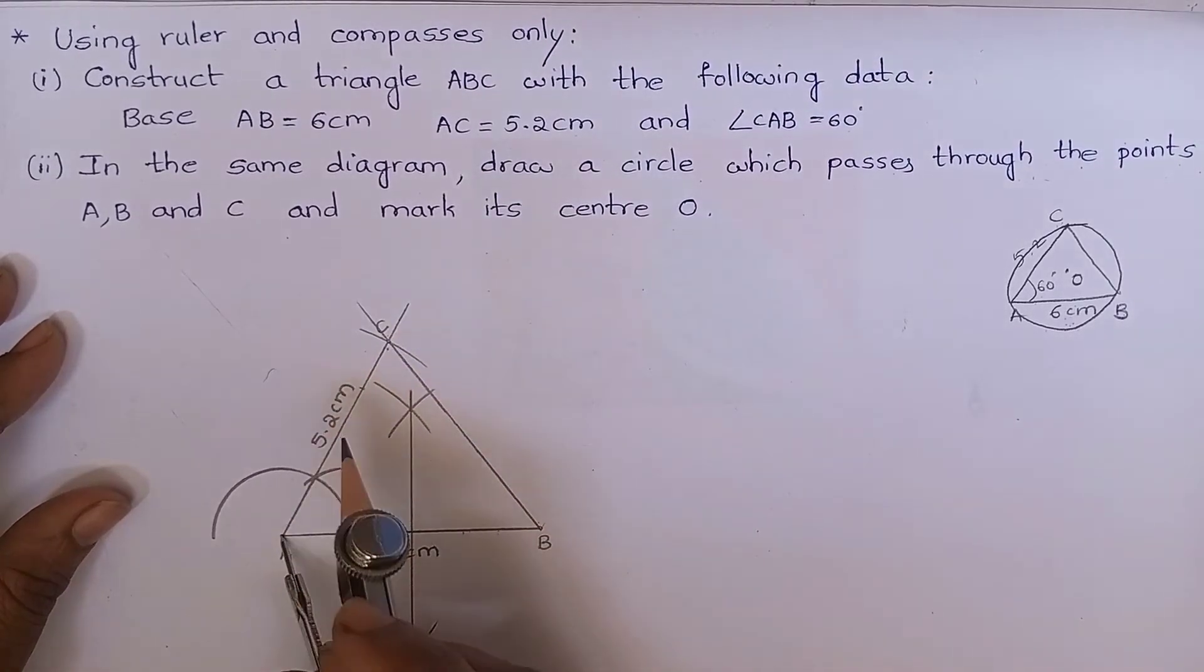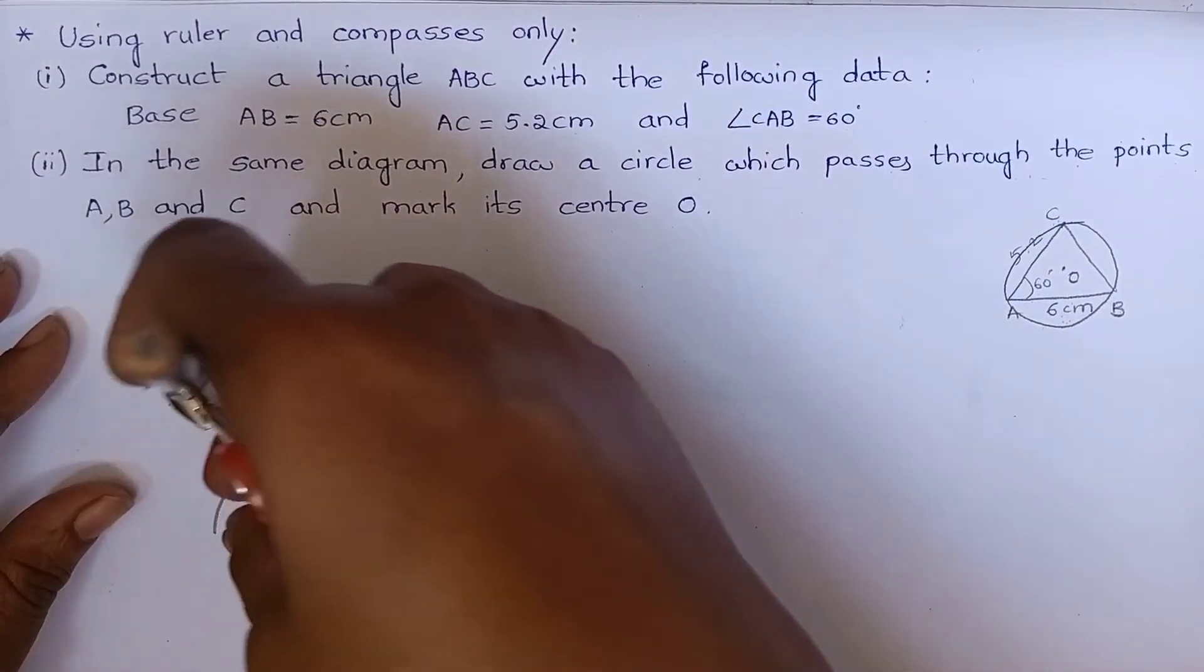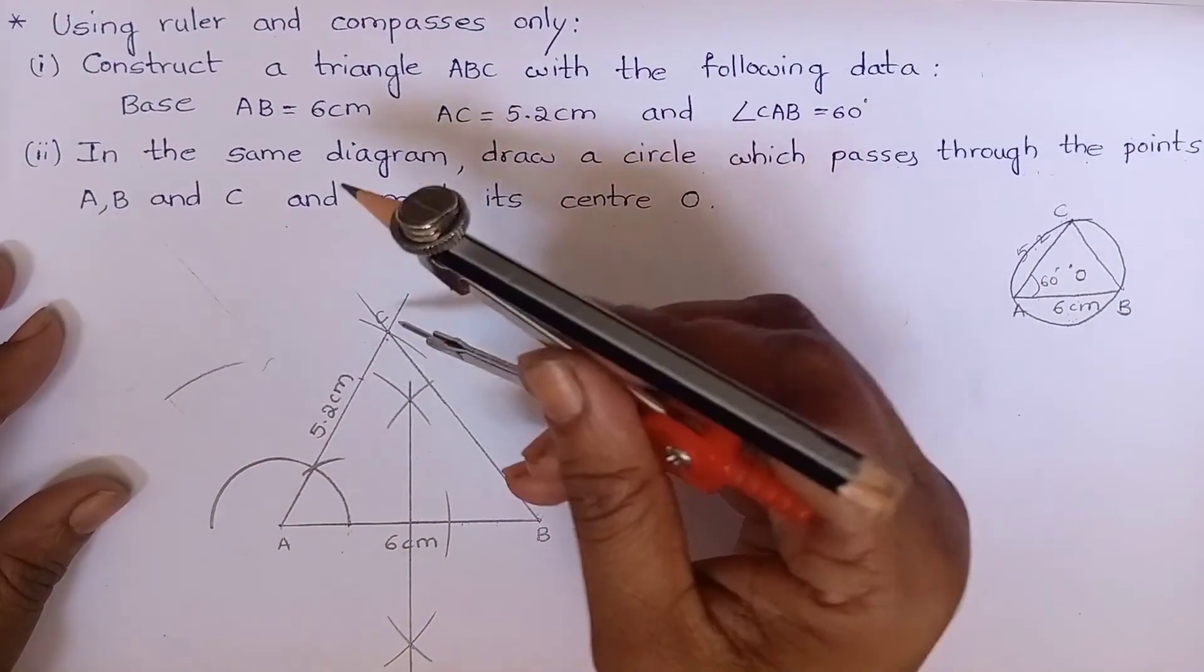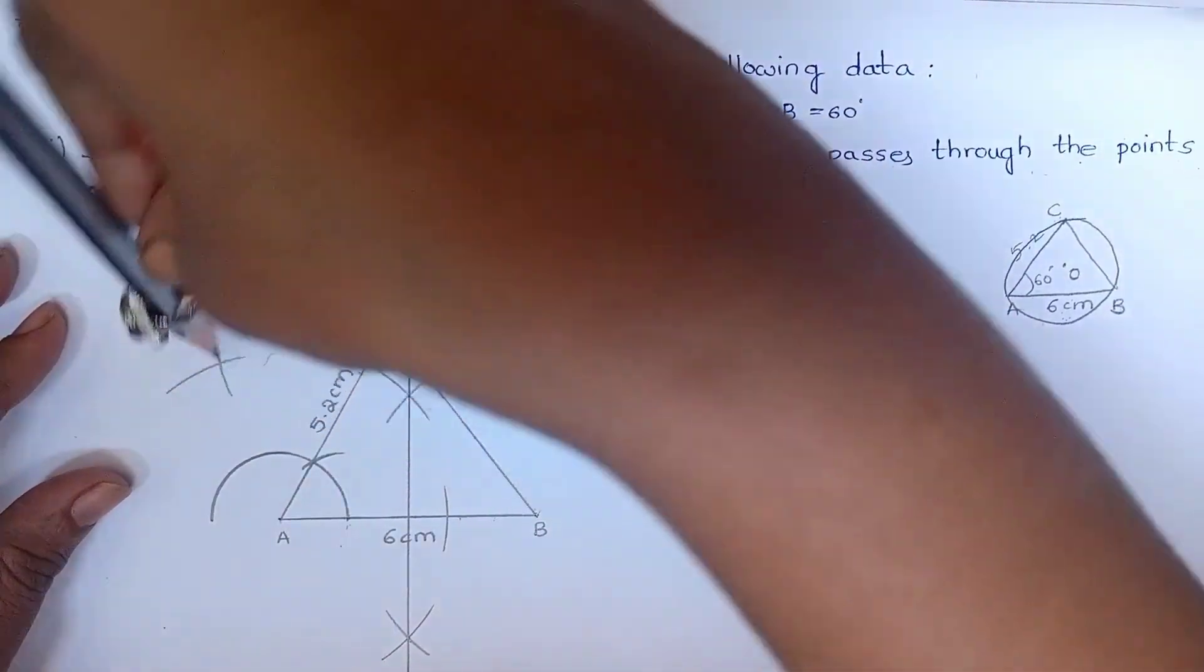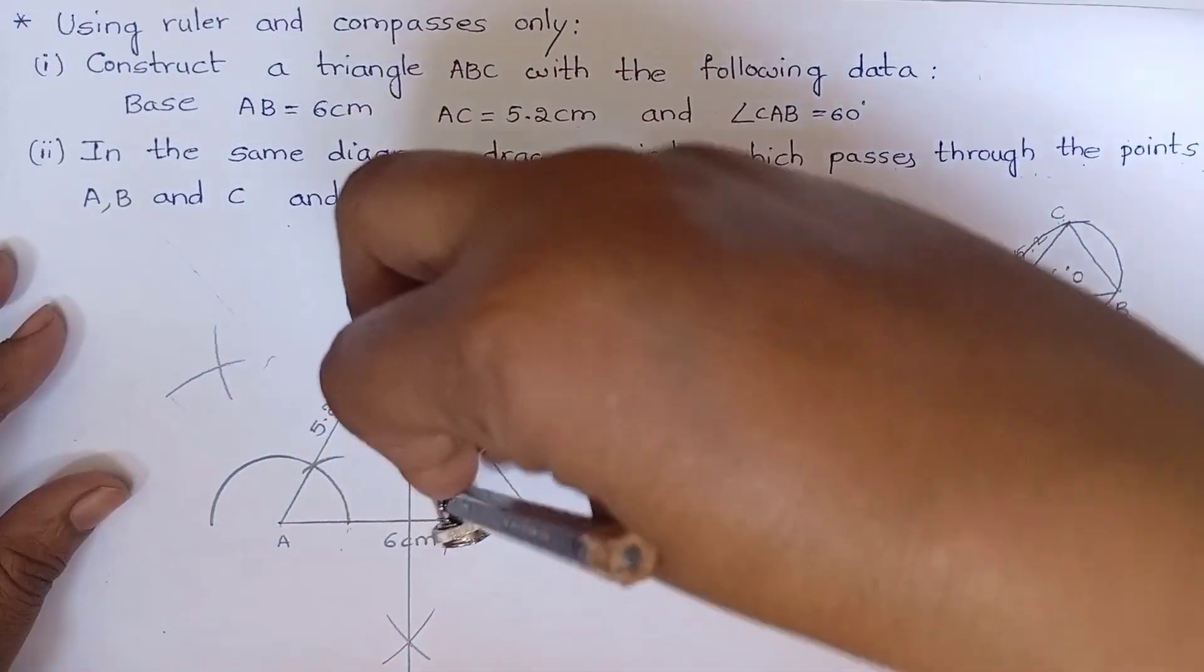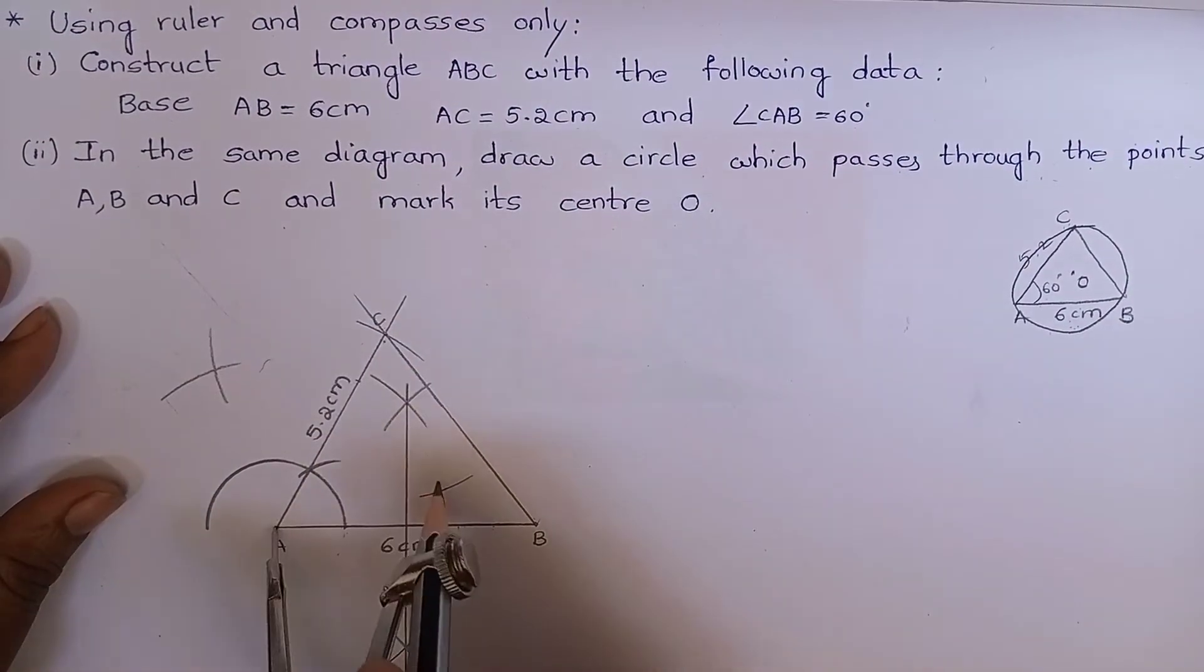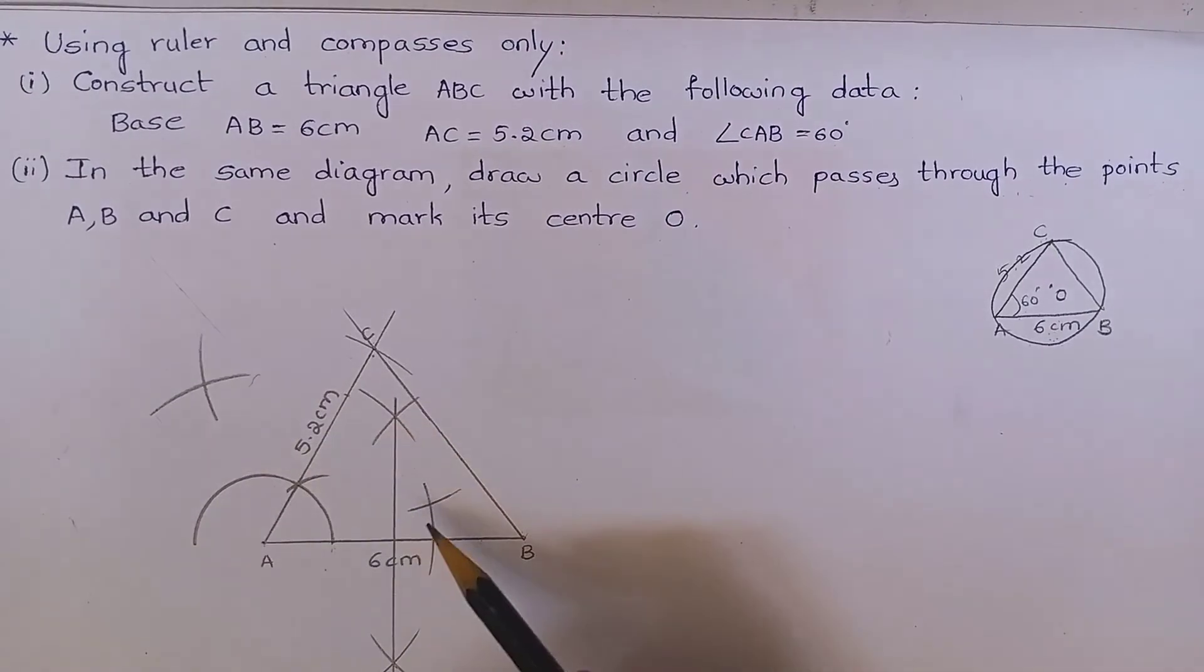Let me keep the compass at point A and cut an arc like this. Keep the compass at point C and cut an arc. Join these two points.